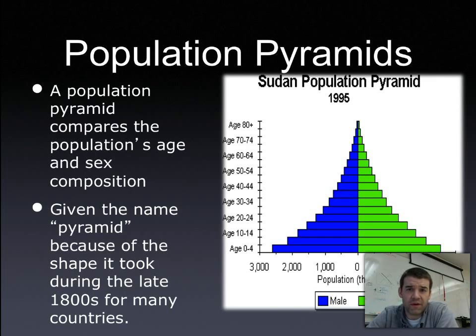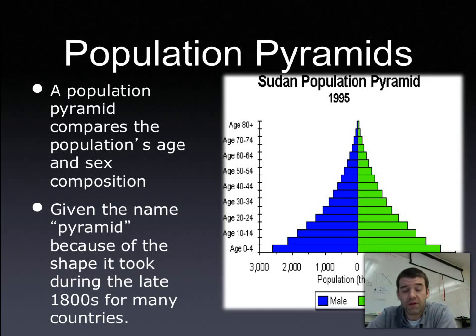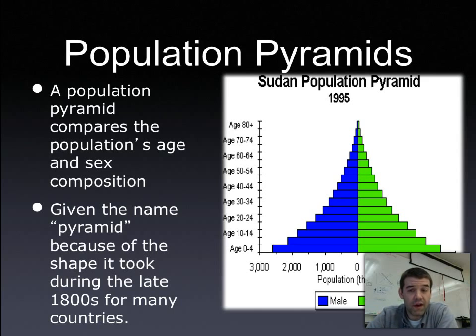Originally, they were called population pyramids because in the 1800s most countries had populations that looked like pyramids. However, as we'll see when analyzing these for various places and countries, that's not the case anymore.